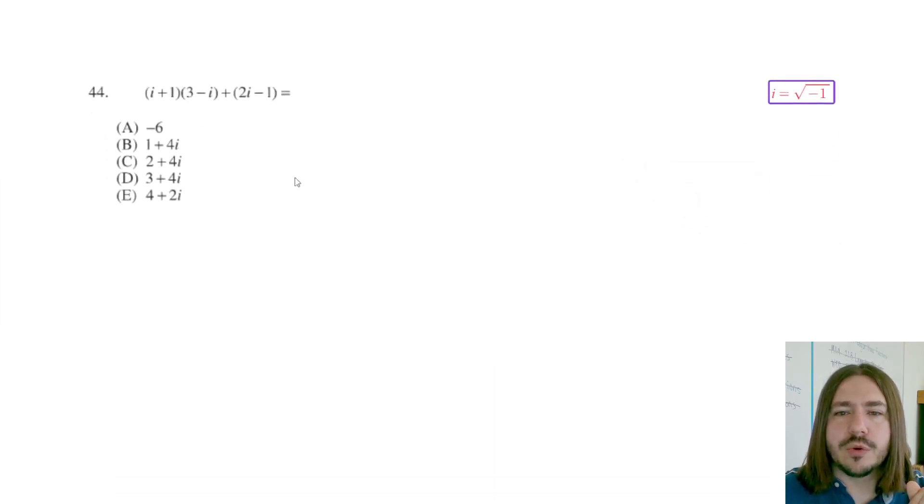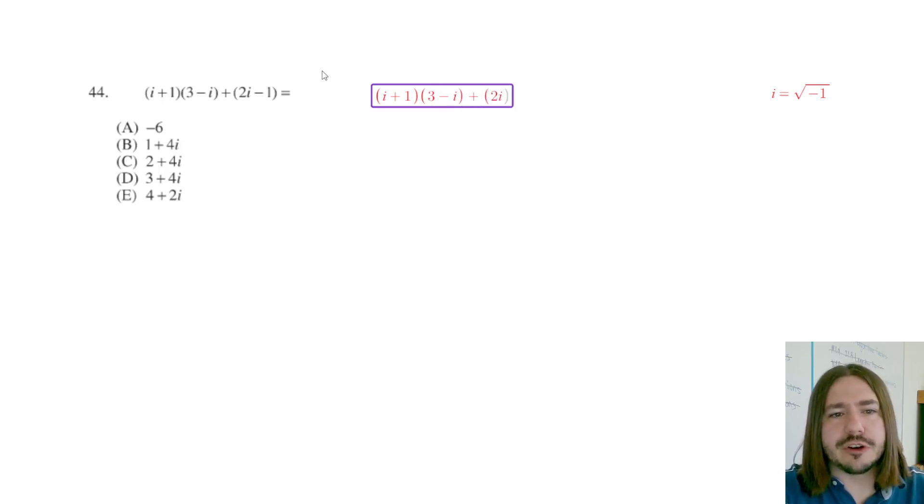But first, we need to simplify this expression, which really doesn't take any understanding. You don't have to understand I. You could just treat it like it's an X and just multiply these together, like you would normally, like you would in an Algebra 1 class. If it just says simplify this expression, that's how we're going to start this out. Although at the end, this whole square root of negative one business is going to come into play.